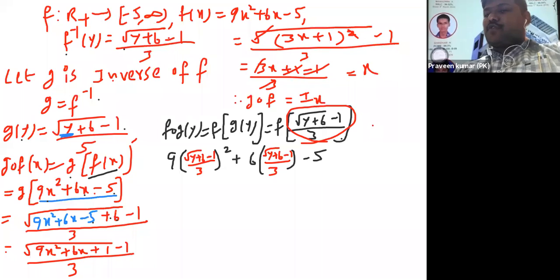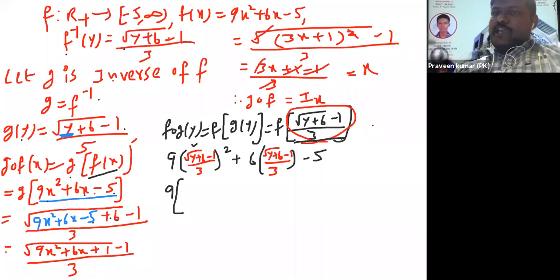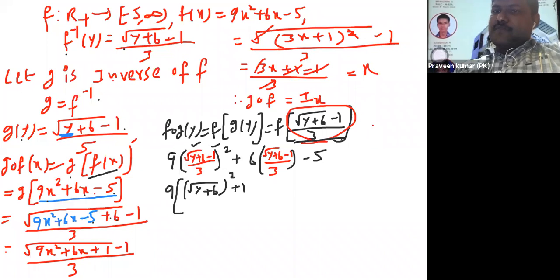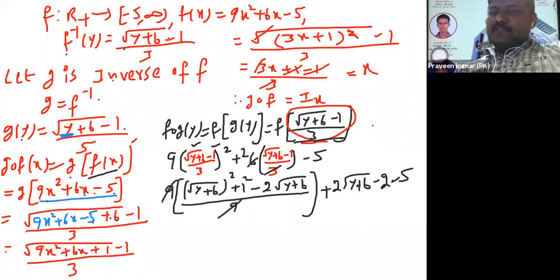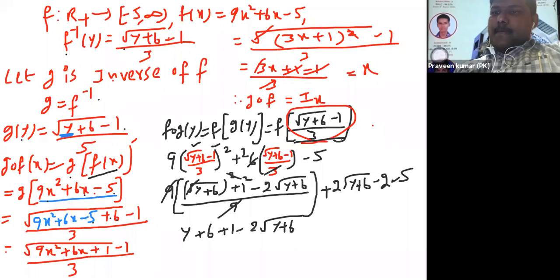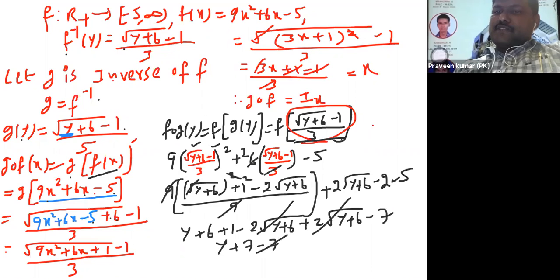In place of x what is there? This term is there. Now 9 into — this is the a minus b whole square formula: a squared means root of y plus 6 whole squared, plus b squared means 1 squared, minus 2ab means 2 times root of y plus 6, divided by 3 squared which is 9. Plus 6 times 2 root of y plus 6 minus 2 minus 5. The 9s cancel, the square root cancels: y plus 6 plus 1 minus 2 root y plus 6, plus 2 root y plus 6 minus 7. The root y plus 6 terms cancel. y plus 6 plus 1 minus 7 equals y. Therefore f circle g is y.